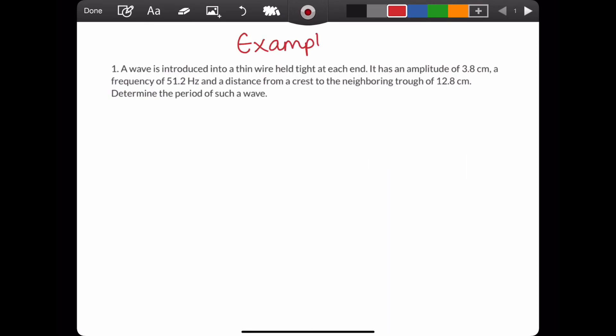This is an example using the equation. In this example, you're given more information than you actually need in order to find the time period of a wave because the only information you need is the frequency. But I've labelled it anyway.